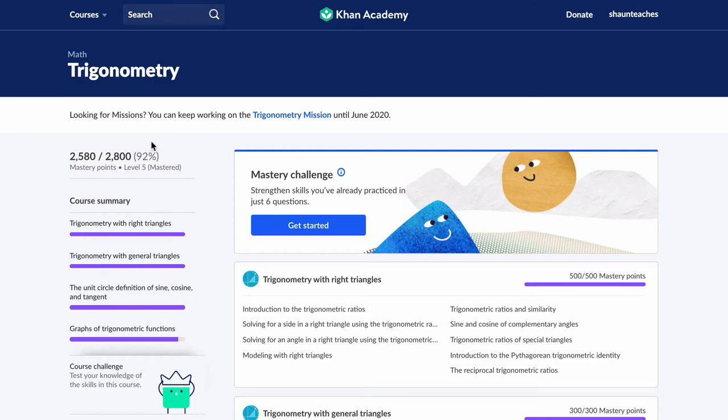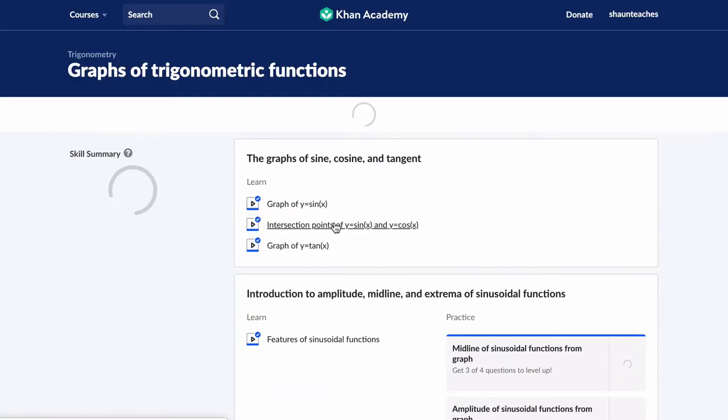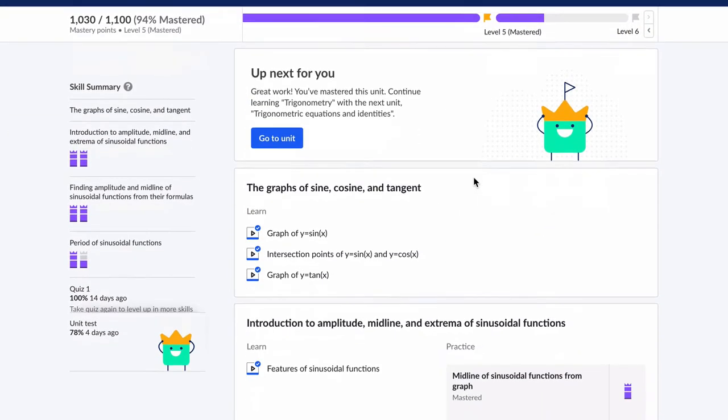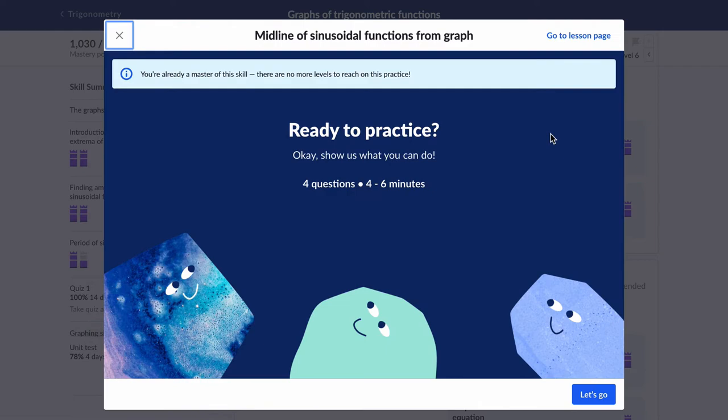Hello, in this video we are working on Khan Academy Trigonometry. We're looking at graphs of trig functions. And the first thing we're going to look at is the midline of a sinusoidal function from a graph.